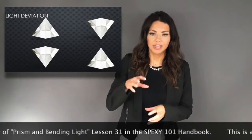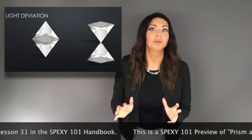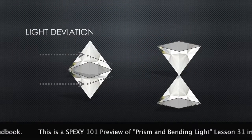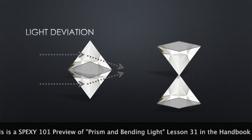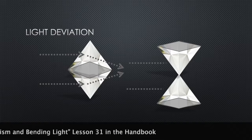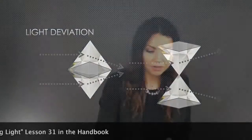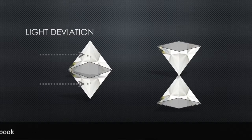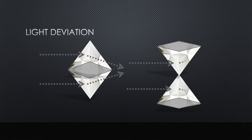Now if we take these two prisms and place them base to base and apex to apex, what's going to happen? On the image on the left we've got the bases together, and on the image on the right we've got the bases on the outside. Since light always bends towards the base, in the first image the light will actually come together, and in the second image the light will spread apart.